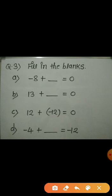Now come to the third fill-up. What will be the answer of plus 12 and minus 12? I have already written the answer: plus 12 and minus 12 is equal to 0. Plus 12 and minus 12 are the additive inverse of each other, and by adding them to each other the answer is 0.